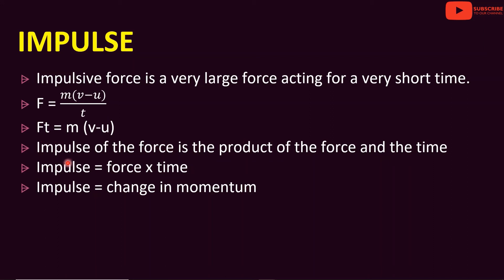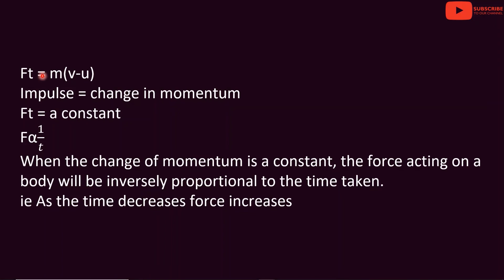F into t is equal to m into (v minus u). The impulse equals the change in momentum. Therefore, F into t equals m into (v minus u). If the change in momentum is constant, then F times t equals a constant. This means F is inversely proportional to time — F is proportional to 1 by t. When the change of momentum is constant, the force acting on the body will be inversely proportional to the time taken.